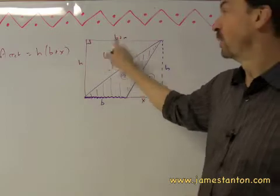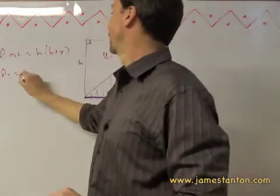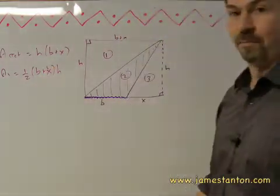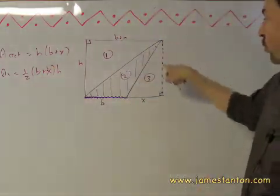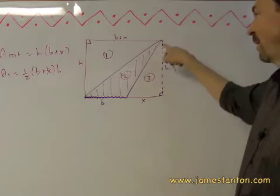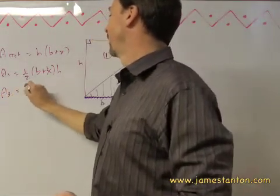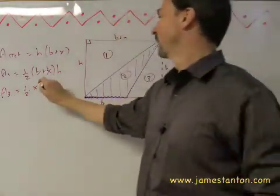But the formula I had before was fine for this one. So I know that area 1 is half its base, b plus x, times h. And area 3 is actually also a triangle. Its height is just inside the base, right on the edge. I can use the same formula I had before, that area 3 is half its base, x times h.